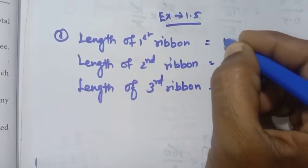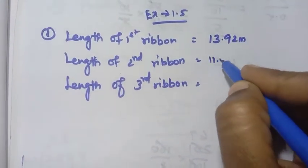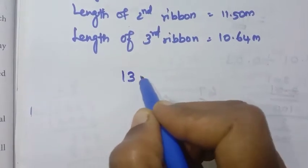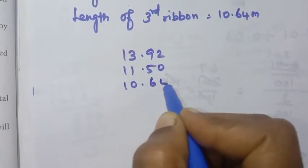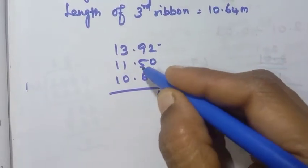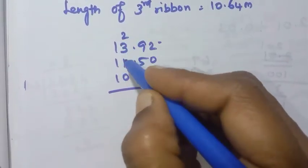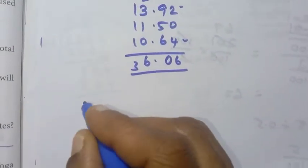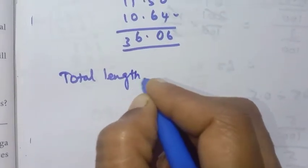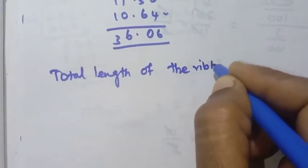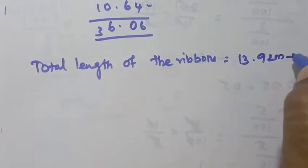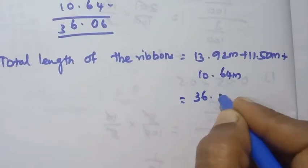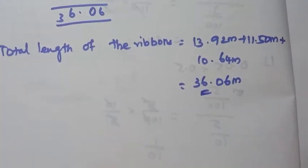First ribbon length is 13.92m, second ribbon is 11.50m, third ribbon is 10.64m. Adding these together: 13.92 + 11.50 + 10.64. The calculation gives us 36.06m. So the total length of the ribbons is 36.06m.